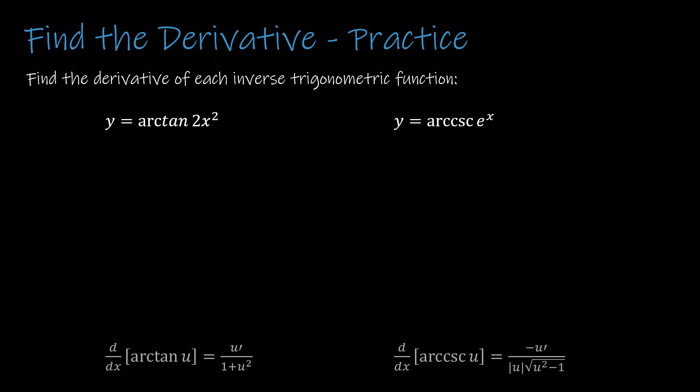For the first question, again, all I'm looking at is what is 2x squared? That is u. So what is u prime? u prime is the derivative of that, which is 4x. Now, all I'm doing is plugging it into the function. I'm saying that y prime is equal to u prime, which is 4x, divided by 1 plus u squared. So that gives me y prime is 4x divided by 1 plus 4x to the fourth. And that's it.